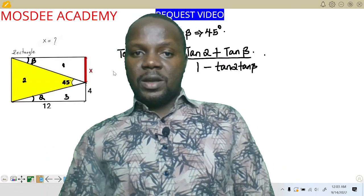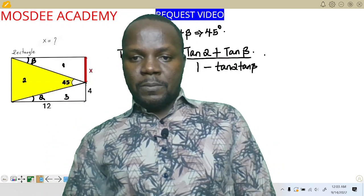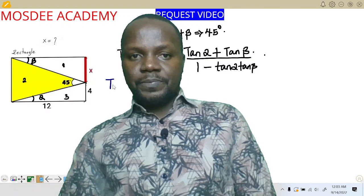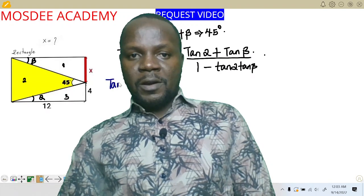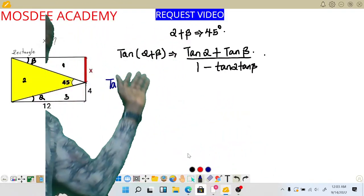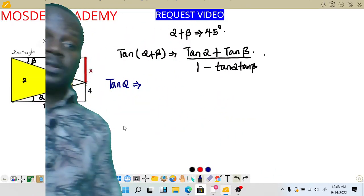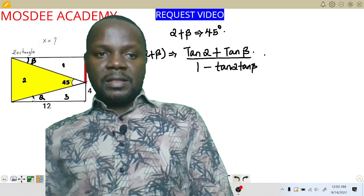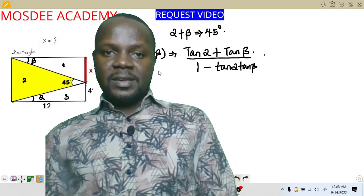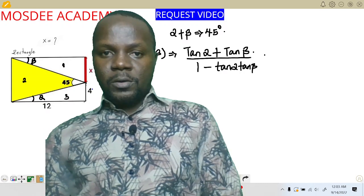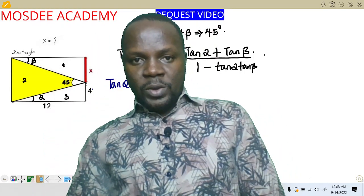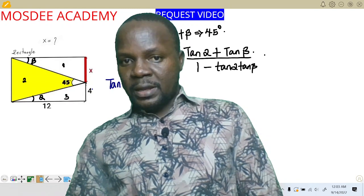Now it's quite simple — we just need to get tan alpha and tan beta. Remember SOHCAHTOA. From here we can say tan alpha. The triangle we are talking about has alpha here. Tan is opposite over adjacent. The opposite is 4, and the adjacent is 12, so that gives us 1 over 3.